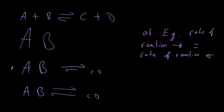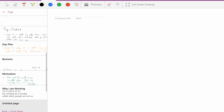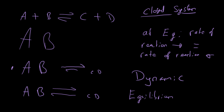Because when we reach equilibrium it's not that everything stops - it's just that the rates are the same. We call this dynamic equilibrium. The word 'dynamic' tells you the reaction hasn't finished; things are just going backwards and forwards at the same rate. It's also important that we're talking about a closed system, meaning no reactants or products can get in or out. If we added more of something or took something away, equilibrium would need to be reached again.